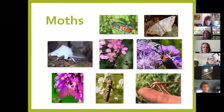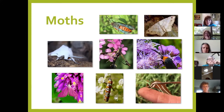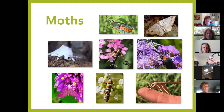Moths are like butterflies in the order Lepidoptera, which translates to 'scale wing.' Butterflies and moths don't actually have fur or hair — what looks like hair is actually a modified, specialized scale, hence the name. Like butterflies, moths also feed with a proboscis, but their bodies, depending on the moth, can be a little fuzzier and can also pick up pollen pretty well.